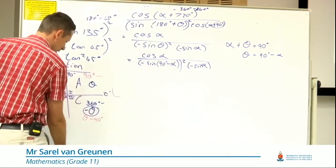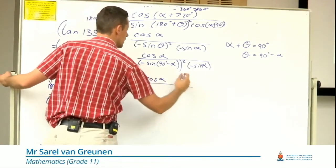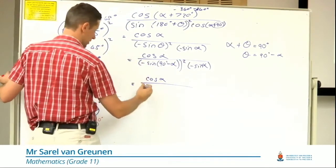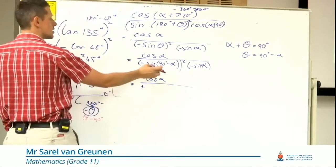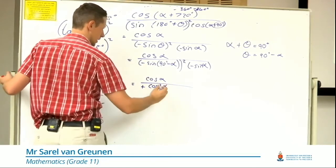So now I'm going to say, well, cos of alpha, I'm going to square that, so it's a positive. Sine of 90 minus is cos squared alpha